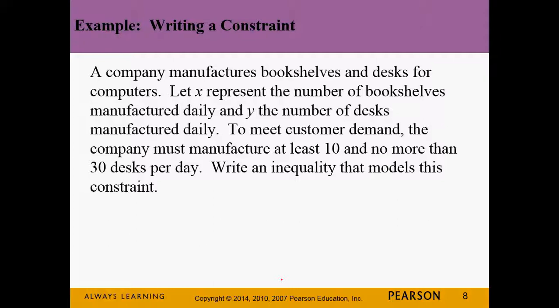Because of customer demand, they have to manufacture at least 10 but no more than 30 desks per day. So what does this constraint look like? It's 10 ≤ y ≤ 30. Y has to be between 10 and 30.